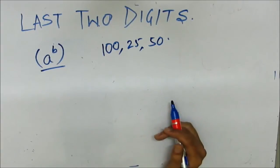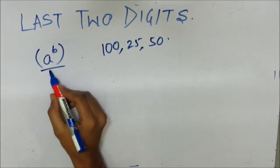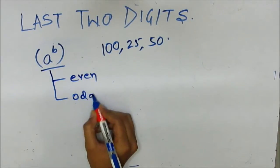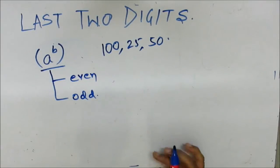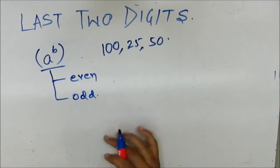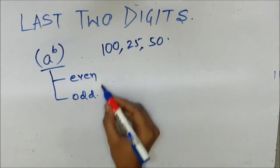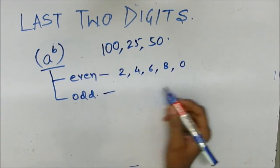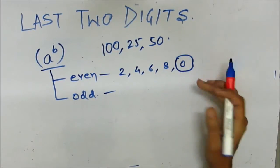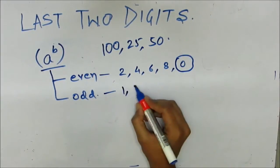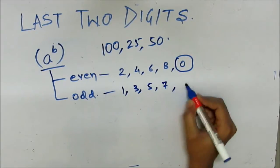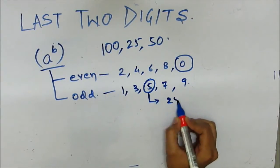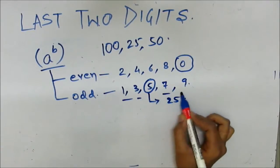To solve such questions we'll first divide the problem into two categories: either an even number or an odd number. We have extremely simple methods to calculate the last two digits for both. Even numbers are numbers ending with 2, 4, 6, 8, or 0. For odd numbers, powers of zero will always end in zeros, so odd digits are 1, 3, 5, 7, and 9. Note that the last two digits of any power of 5 will always be 25. For the remaining digits we have specific methods.